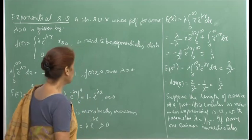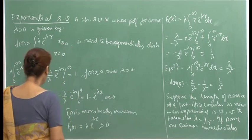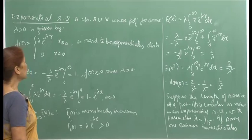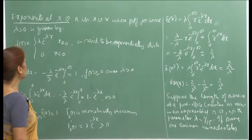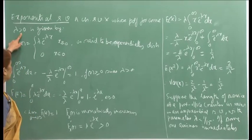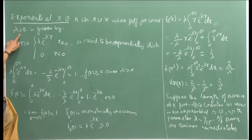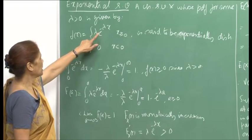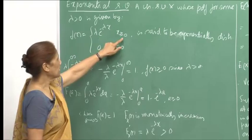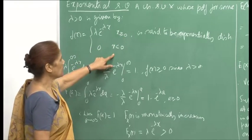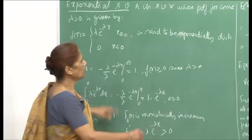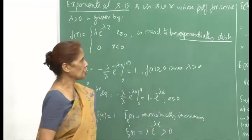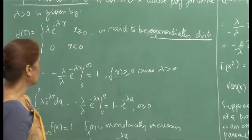After discussing the normal random variable, we will today talk about the exponential random variable, a continuous random variable x whose PDF for some lambda greater than 0. The parameter has to be positive. Then f(x) equals lambda e raised to minus lambda x for x non-negative and 0 otherwise is said to be exponentially distributed or has an exponential distribution.